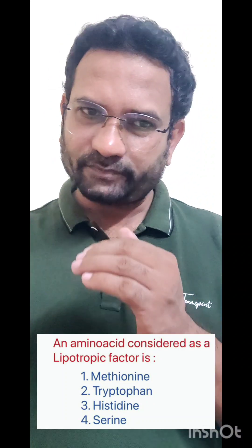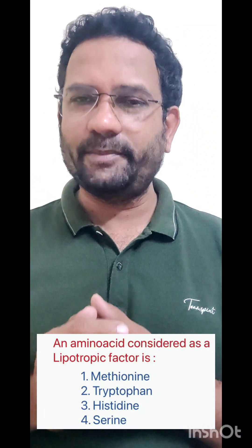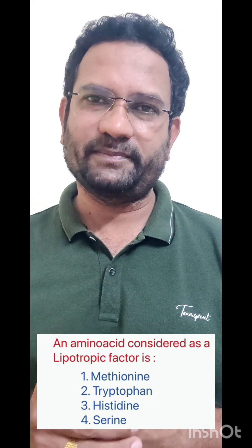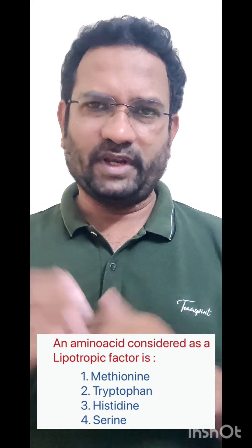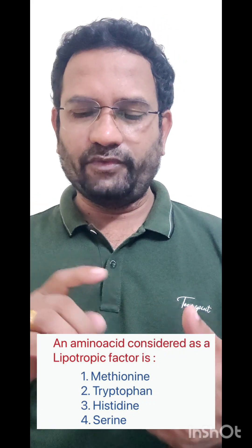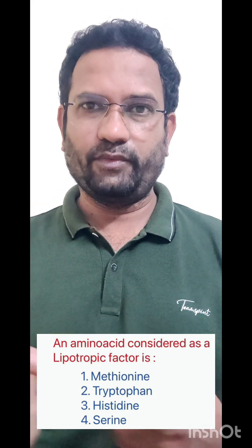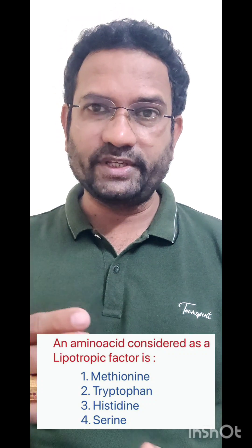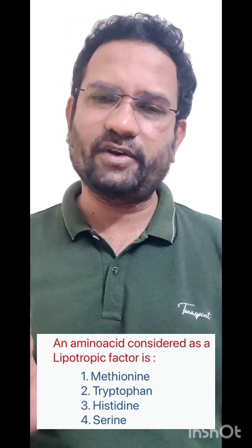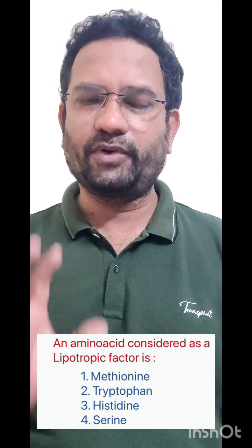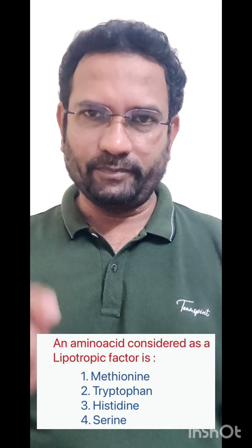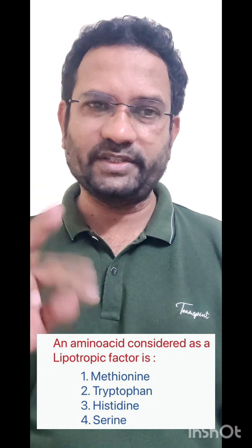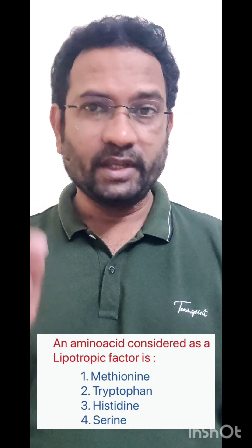So what is that factor among all these amino acids? Methionine is the lipotrophic factor. Along with methionine, you also have folic acid, B12, Vitamin E, lecithin, and inositol — all of them are called lipotrophic factors. Methionine is a sulfur-containing amino acid which is a lipotrophic factor.